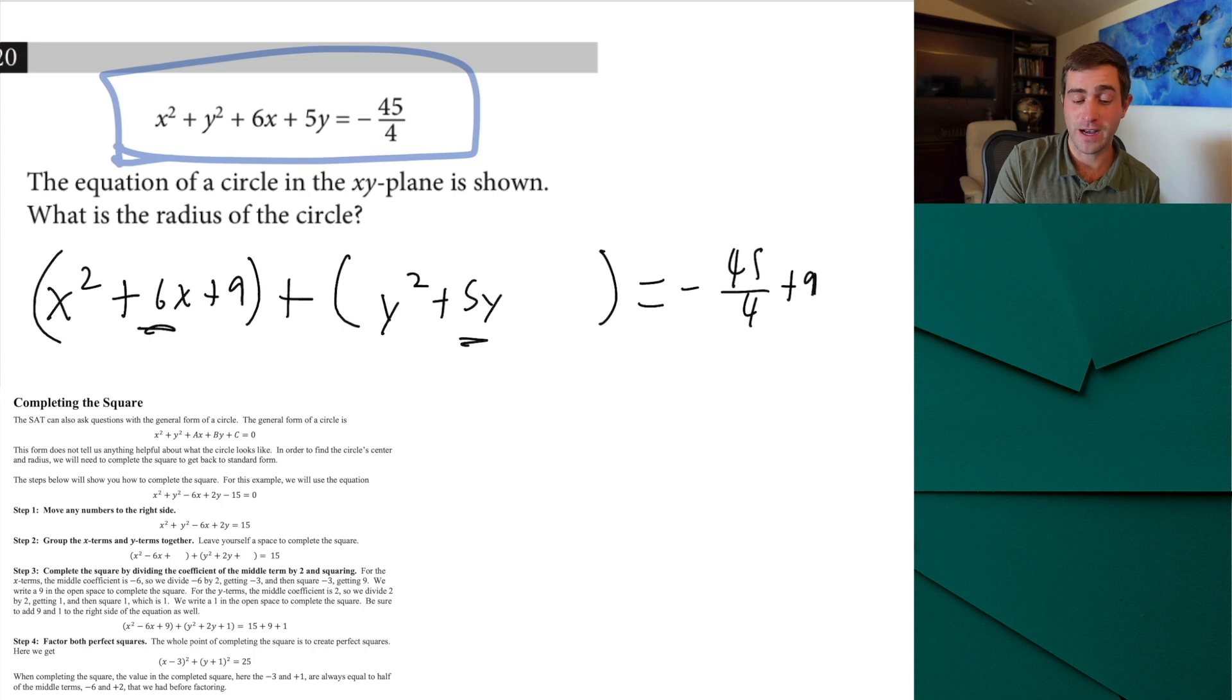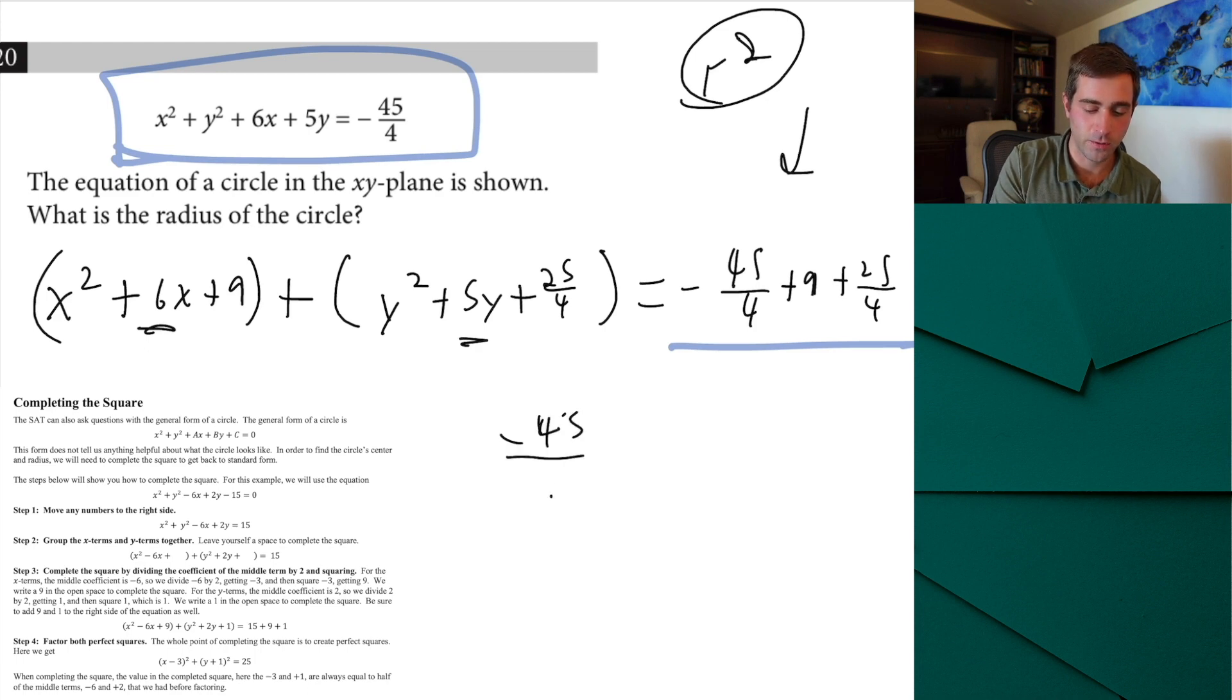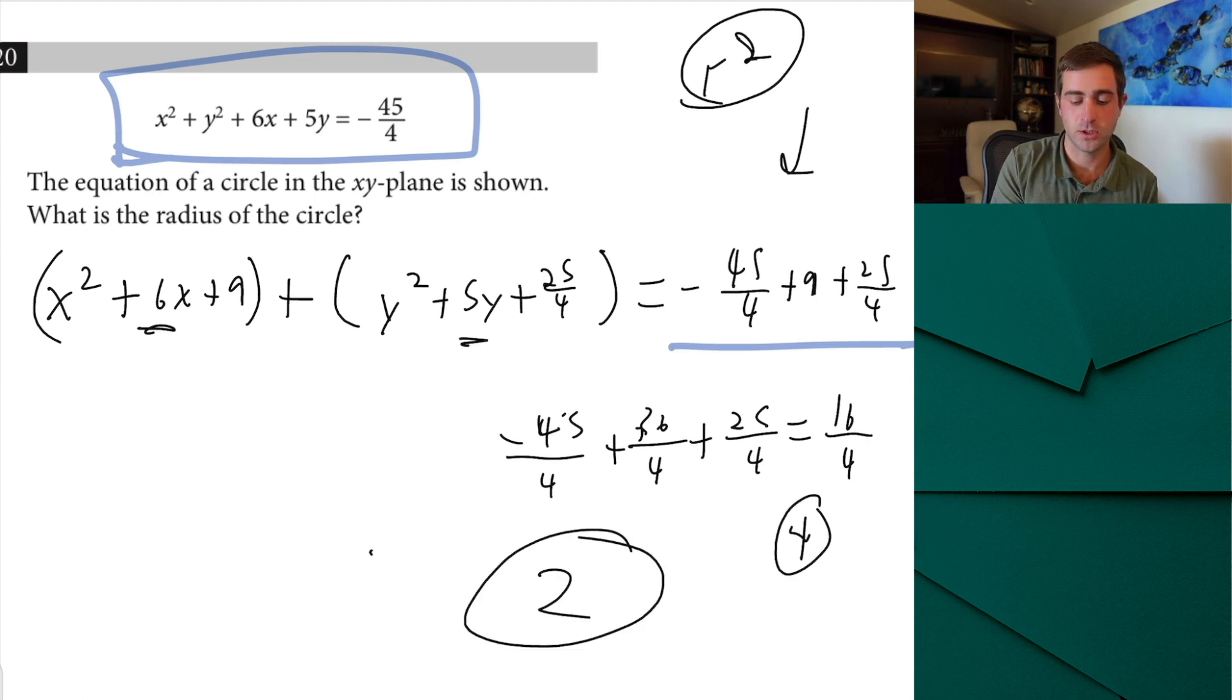Well now we know this portion over here is equal to our r squared, our radius squared. So we have to combine all of these terms so we can solve for that. So we're going to now have negative 45 over 4 plus 36 over 4 plus 25 over 4. That's going to end up equaling 16 over 4 which is simply the same as 4. Now we take the square root of that and that's going to give us our correct answer of 2. Just make sure you have those steps memorized down from my math book that I showed you there. If you get one of these, this is supposed to be the hardest question in the no-calc section. It's something you easily can get right.